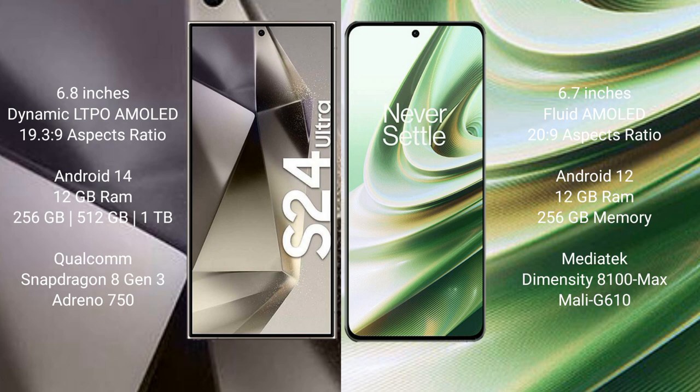Samsung Galaxy S24 Ultra comes with 12GB RAM and 256GB, 512GB, or 1TB internal storage, powered by a Qualcomm Snapdragon 8 Gen 3 processor and Adreno 750 GPU.